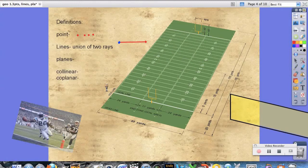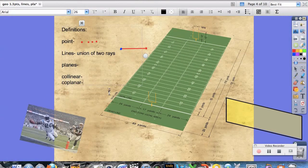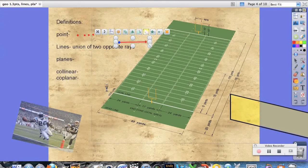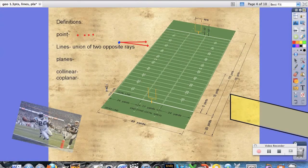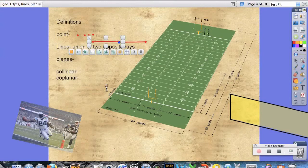Now a line is the union of two rays, two opposite rays. So we have one ray going in that direction, and one ray going in the complete opposite direction. Same endpoint, going in completely opposite directions.